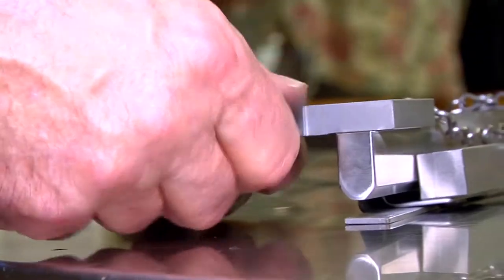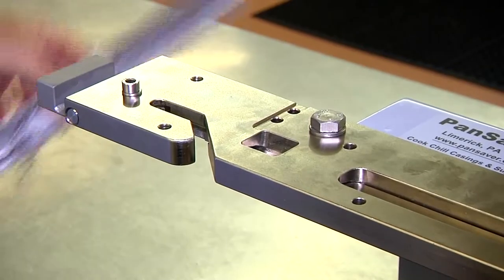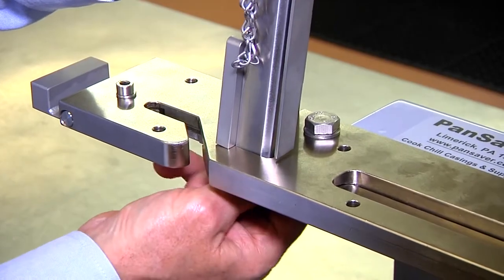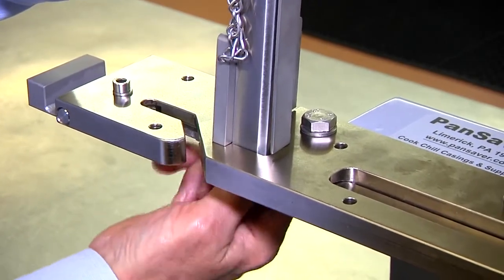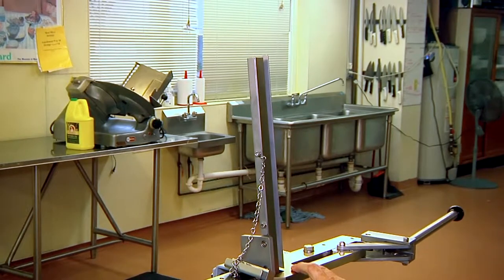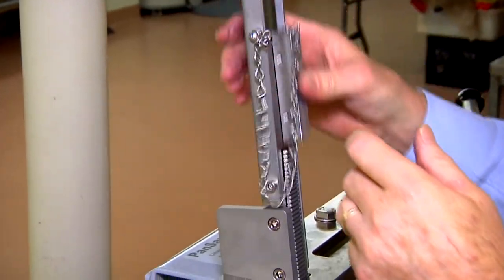Remove the two hex bolts from the bottom of the clipper magazine. Position the magazine on top of the horizontal base in the slots provided and secure it with the two hex bolts. With the clip magazine attached to the horizontal base, the clips can then be inserted into the clip magazine secured by the clip weight.